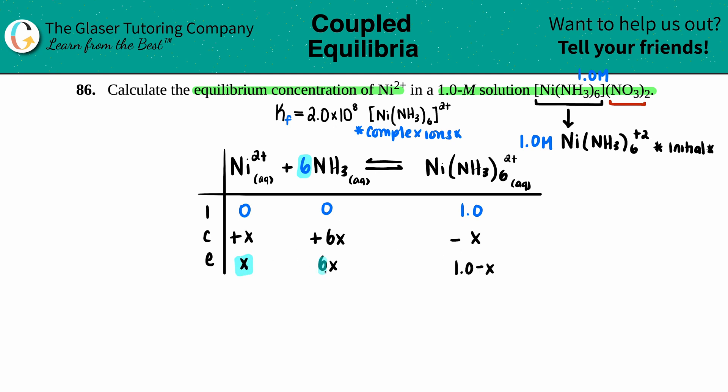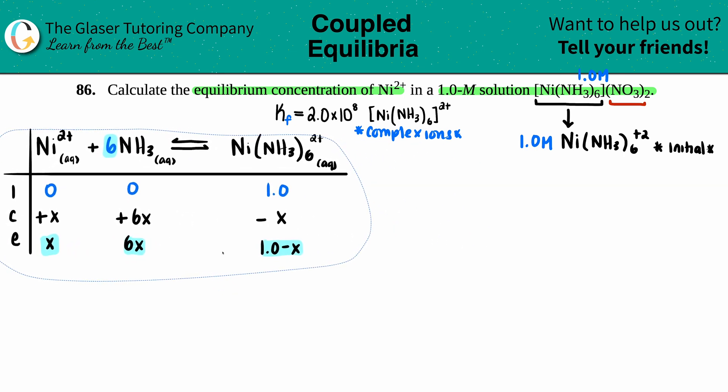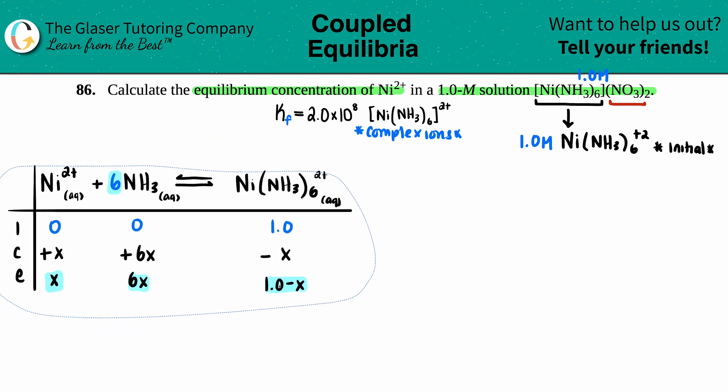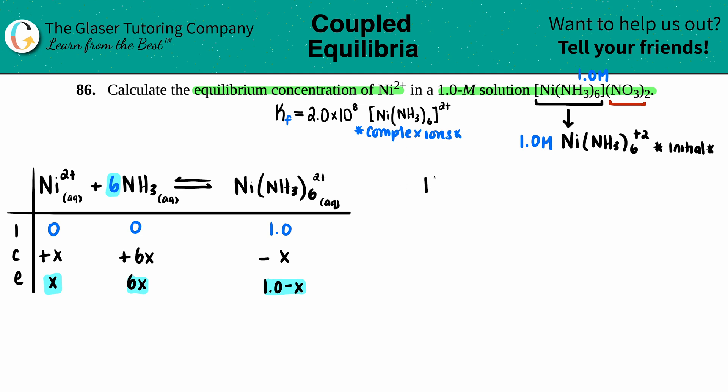And these are your values that are going to be going into your Kf expression. Let's pull this over to the side. Now let's write out our specific Kf equation. We have Kf equals concentration of the products divided by the reactants. There's one product and two reactants—they're all aqueous—so we have [Ni(NH3)6]2+ all divided by [Ni2+] times the concentration of the NH3, and that has to be raised to the sixth because you always raise it to the coefficients. Now, if I just say Kf was 2.0×10^8, this was 1.0-x, we have x, and we have 6x.